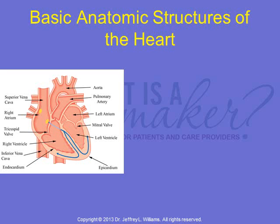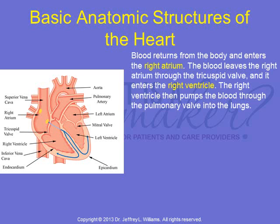The basic anatomic structures of the heart are shown below. Blood returns from the body and enters the right atrium. The blood leaves the right atrium through the tricuspid valve and enters the right ventricle. The right ventricle then pumps the blood out through the pulmonary valve and into the lungs.